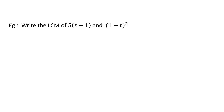Look at this example: 5(t minus 1) and (1 minus t) squared. Here the terms are similar but interchanged — t minus 1 and 1 minus t. When you get a question like this, first you have to convert them to one order: t minus 1 must be converted to 1 minus t. So 5(t minus 1) can be written as 5 times minus 1 taken out of a bracket, giving (1 minus t). If you remove the bracket, minus 1 into 1 is minus 1 and minus 1 into minus t is plus t, giving t minus 1 — the initial expression.